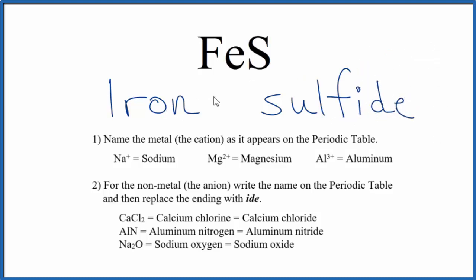At this point we have iron sulfide. But iron, that's a transition metal. It can have a different charge depending on what it's bonded to. Here it's bonded to sulfur, so let's look sulfur up.